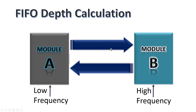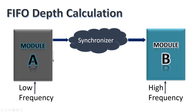Both modules have separate transmit and receive channels. Module A transmits data to module B on its transmit channel and receives data from module B on its receive channel. Similarly, module B transmits data to module A and receives data from module A. When module A transmits data to module B, our writing speed is very slow but our reading speed is very high, so we need no memory buffer between the two modules.